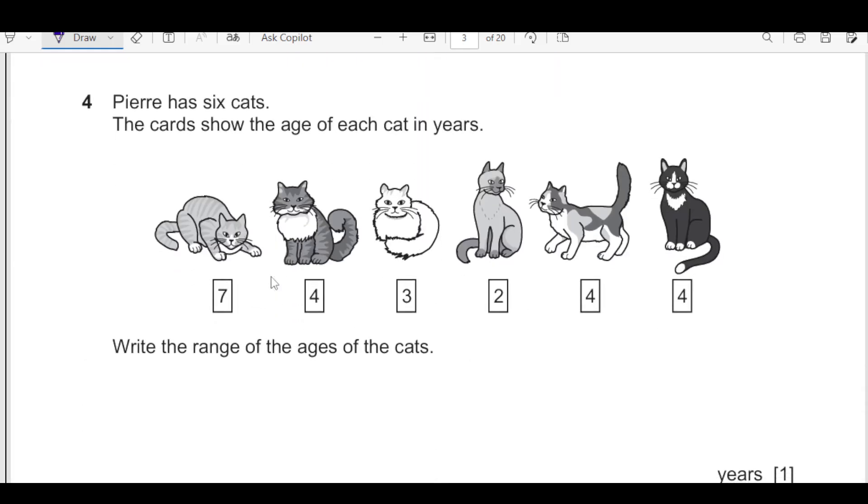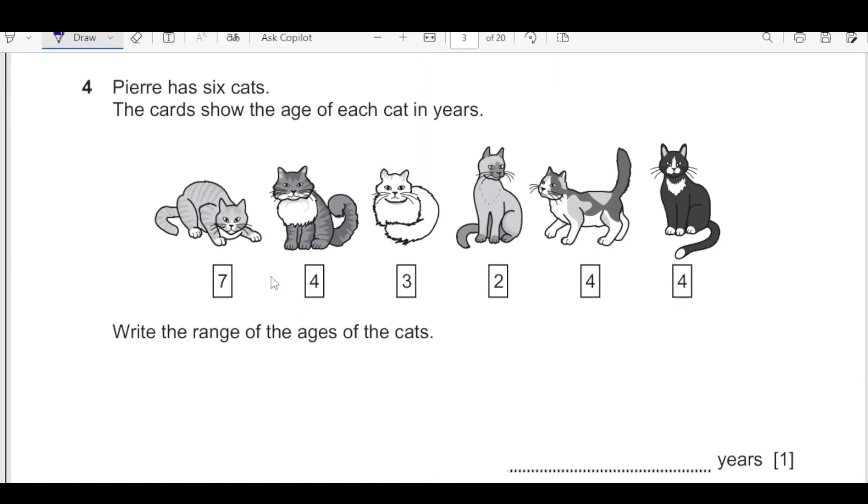Number 4. Pere has 6 cats. The card shows the age of each cat in years. This is 7 years, 4 years, 3 years, 2, 4 and 4. Write the range of the ages of the cats.